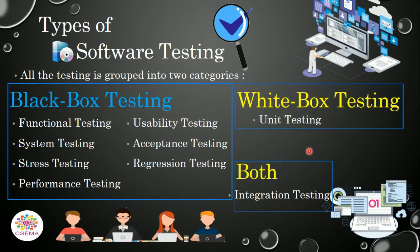The second category is white box testing, in which the tester has full knowledge about the internal functionality of the system. It is based on coverage of code statements, branches, paths, and all conditions used in the software system. White box testing is considered low-level testing and is also called glass box testing.